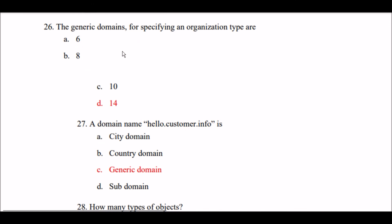Next question: The generic domains for specifying an organization type are how many? Option A: 6. Option B: 8. Option C: 10. Option D: 14. The right answer is Option D — there are 14 generic domains for specifying an organization type.